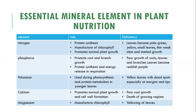The third essential mineral element is potassium. The role of potassium in plant nutrition is that it is used for starch synthesis and protein metabolism in younger leaves. Deficiencies of potassium may include yellow leaves with dead spots, especially at the margins and tips.